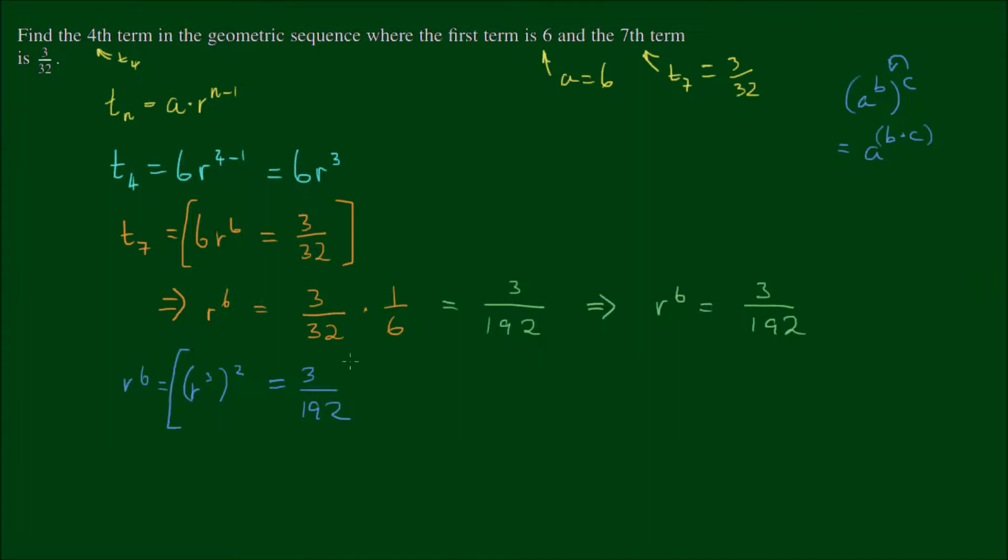Let's take the right-hand side equality and work with that. What I'll do now is to take the square root of both sides. So that means r cubed will give me two possibilities, a positive answer and a negative answer. So we have plus or minus the square root of 3 on 192.